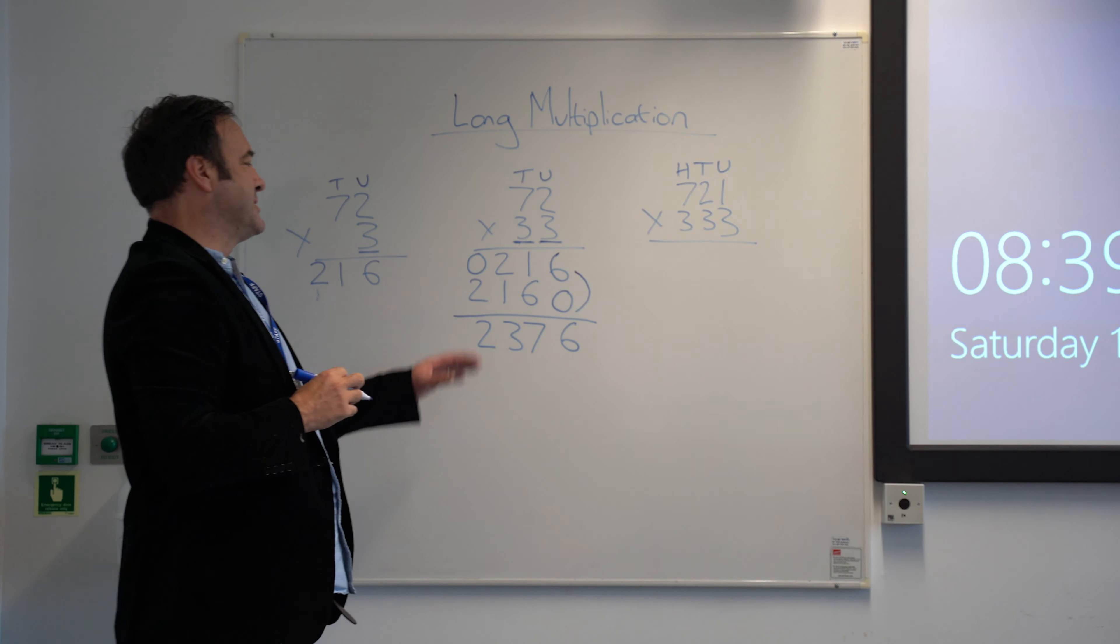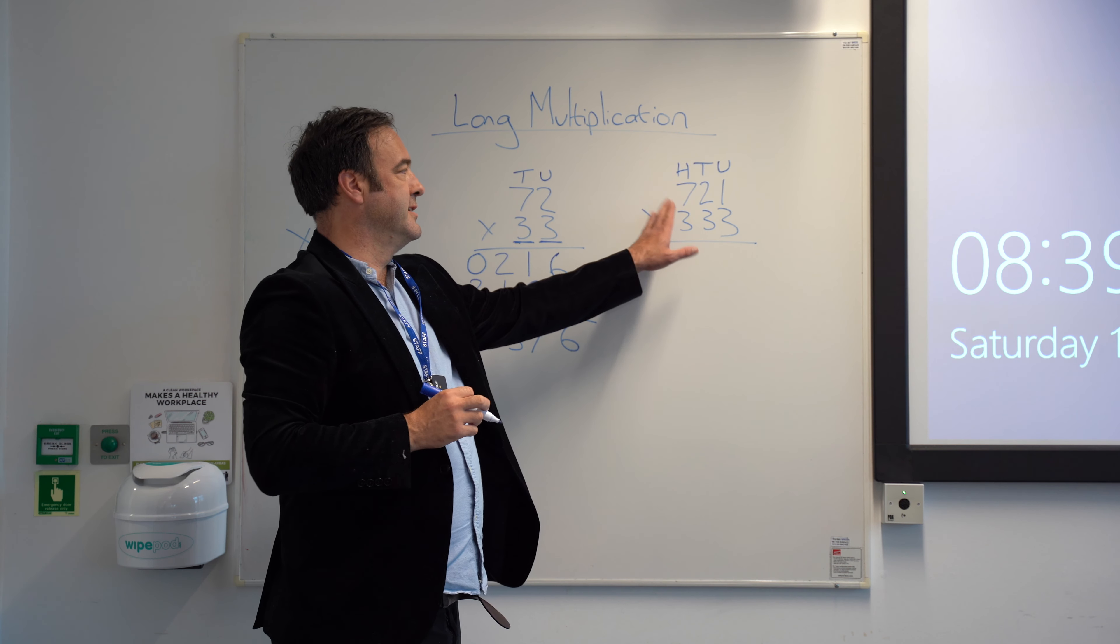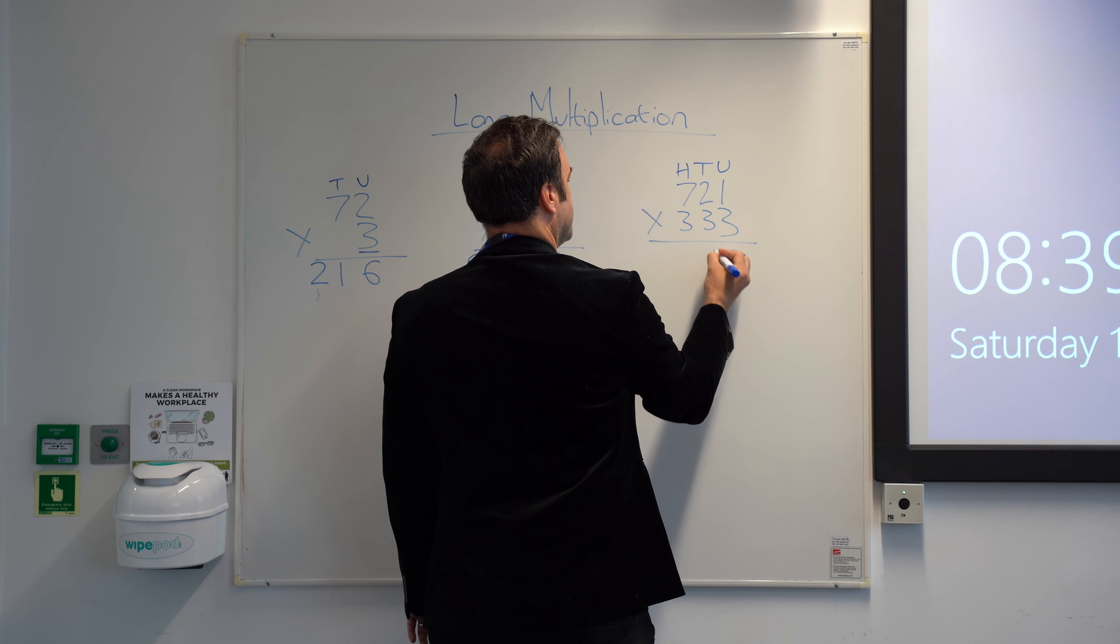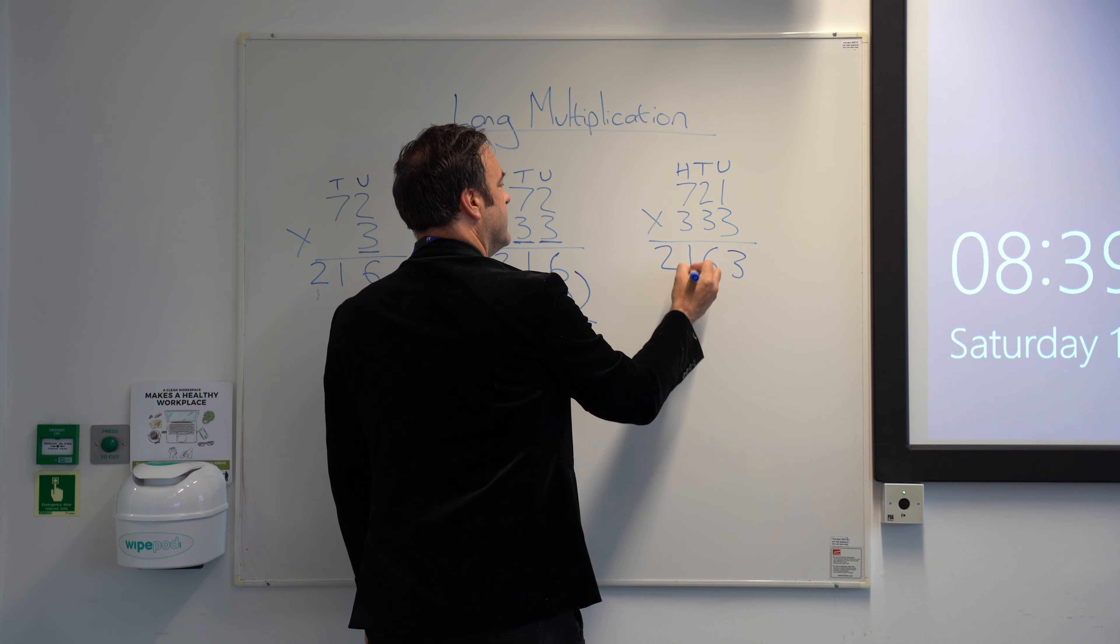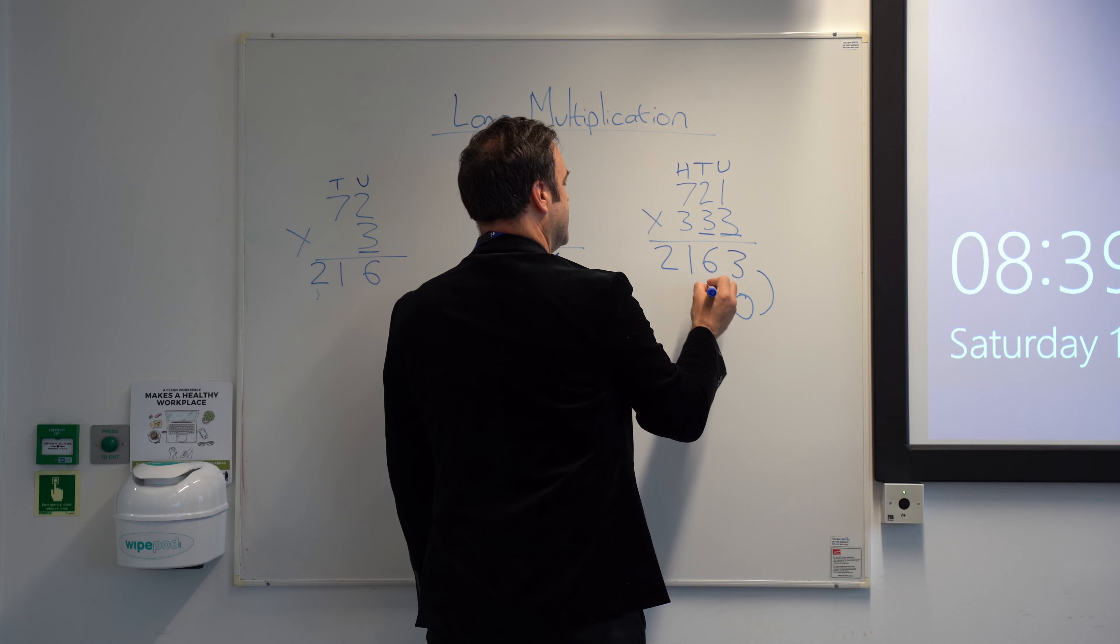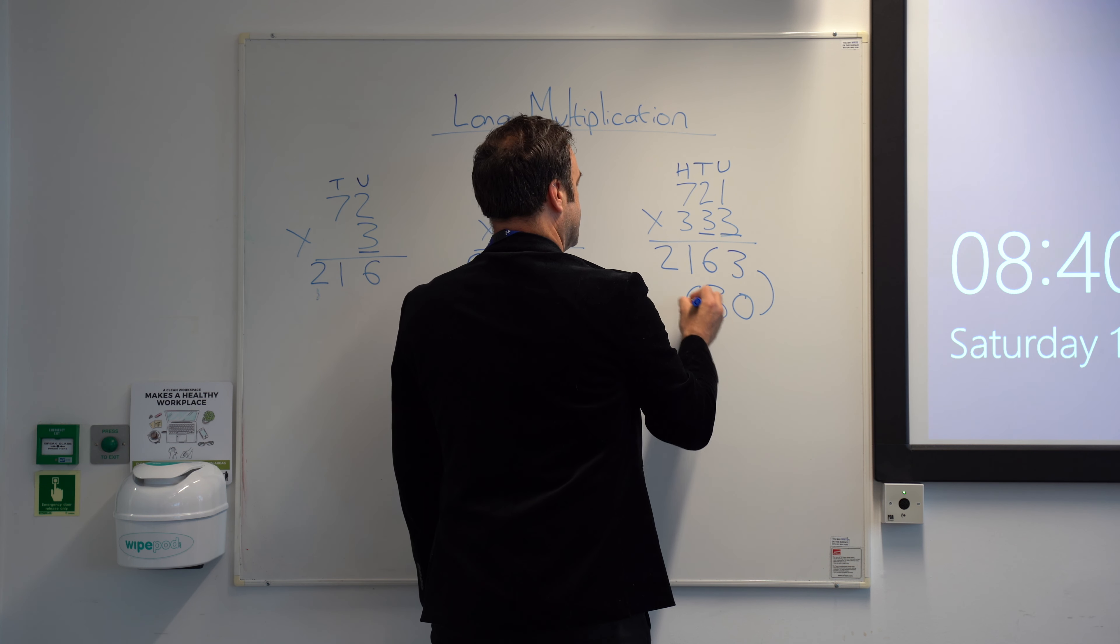So going through, we're going to take this process a step further. Now we're doing 3 digits times 3 digits. So we've got 3 times 1 is 3, 3 times 2 is 6, 3 times 7 is 21. So we drop down the row, we step out using the zero to move out to the tens. 3 times 1 is 3, 3 times 2 is 6, 3 times 7 is 21. So zero is a placeholder.